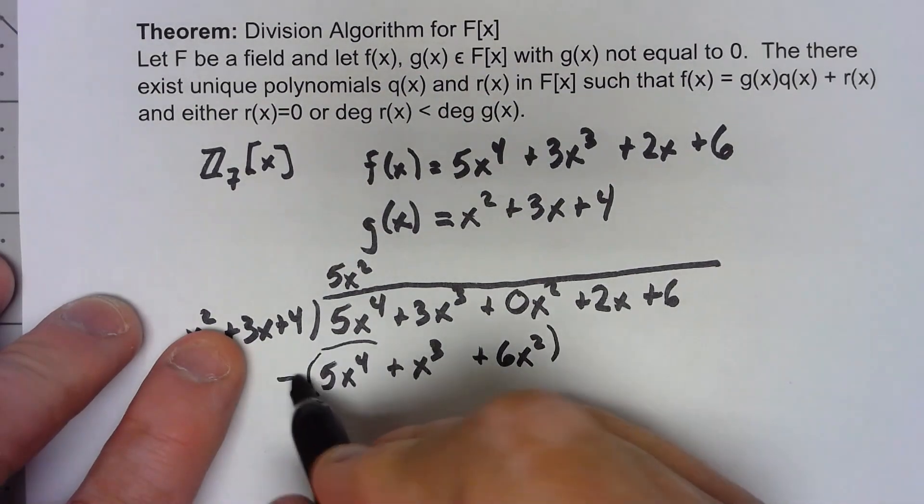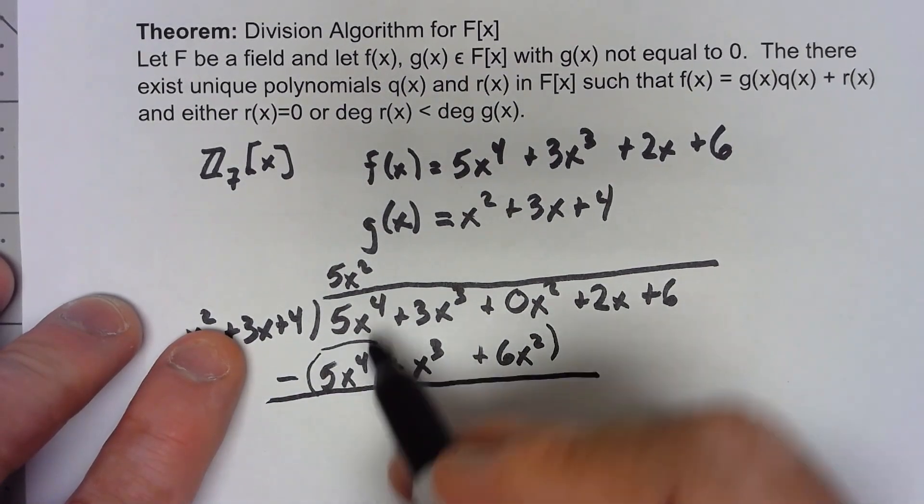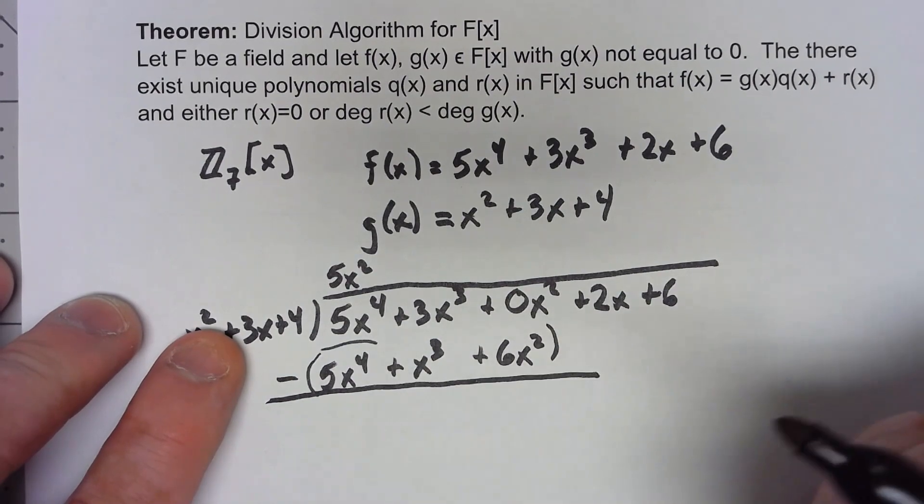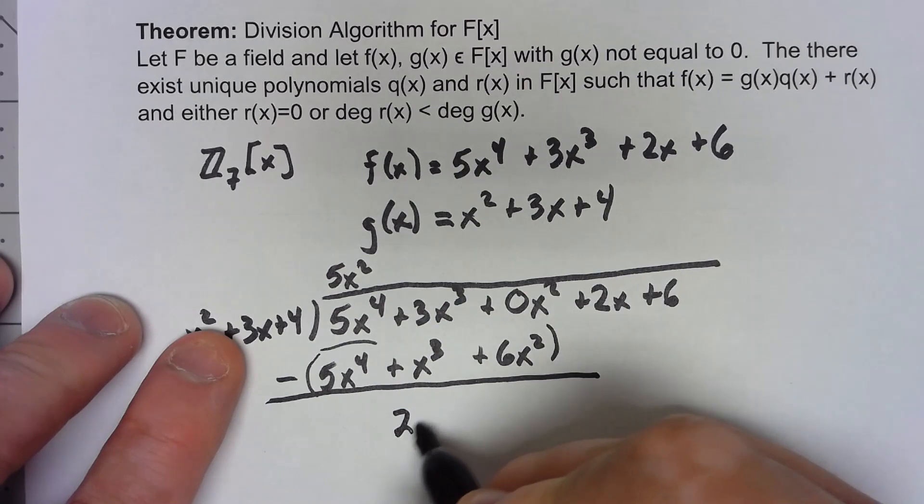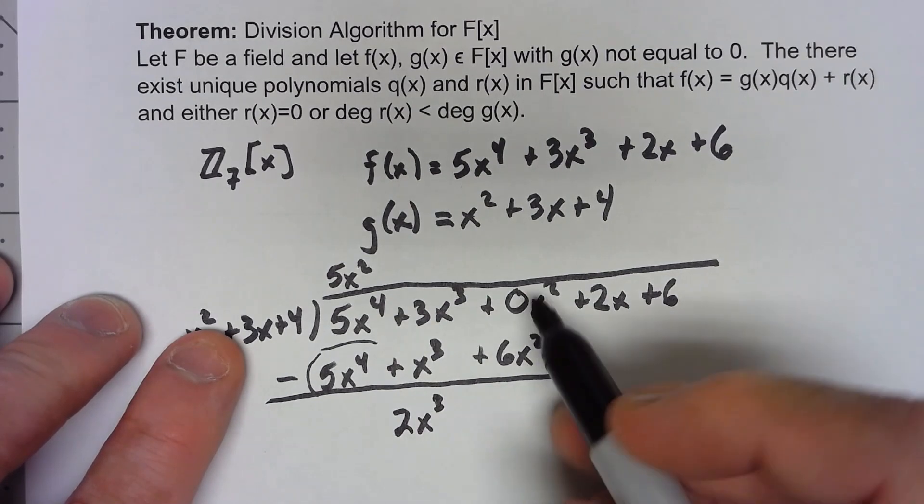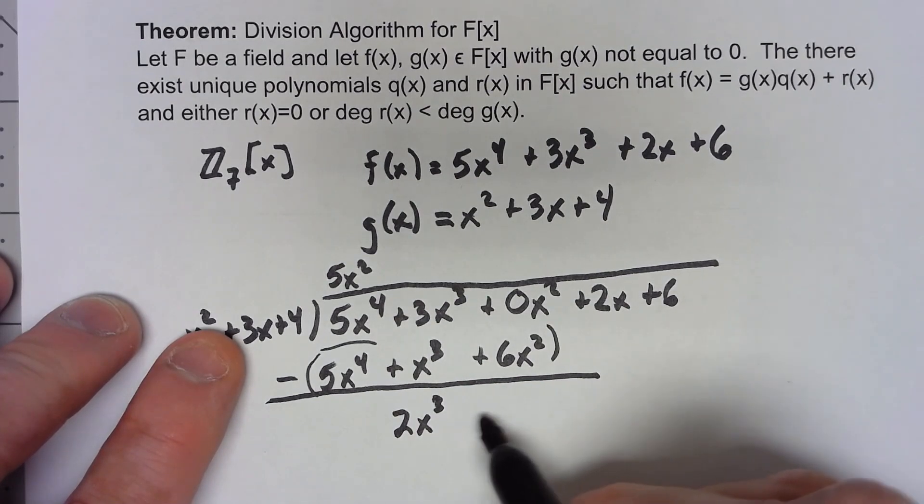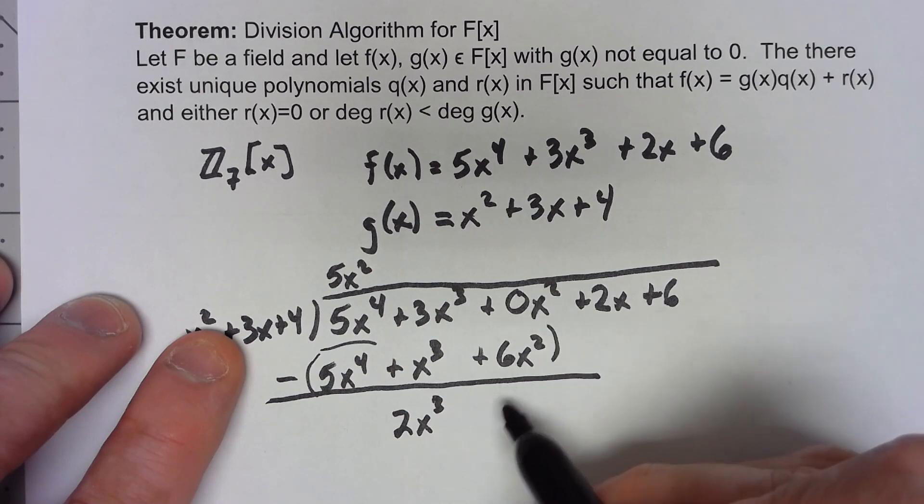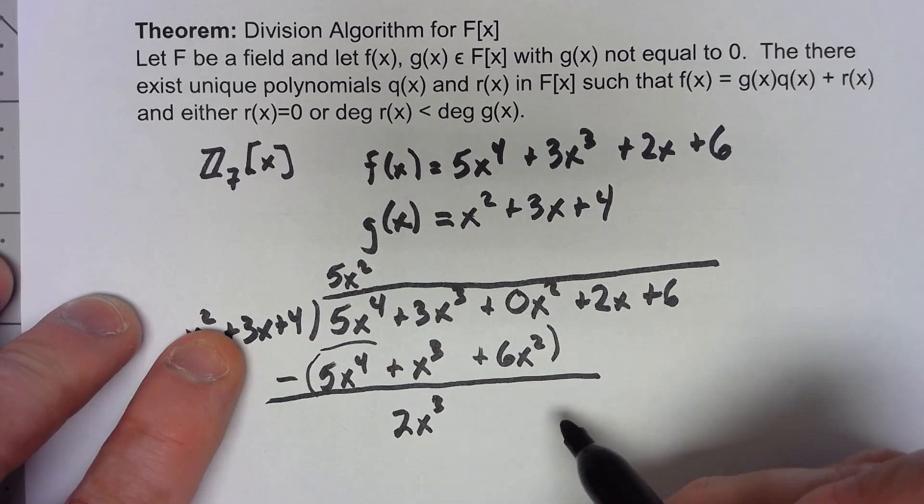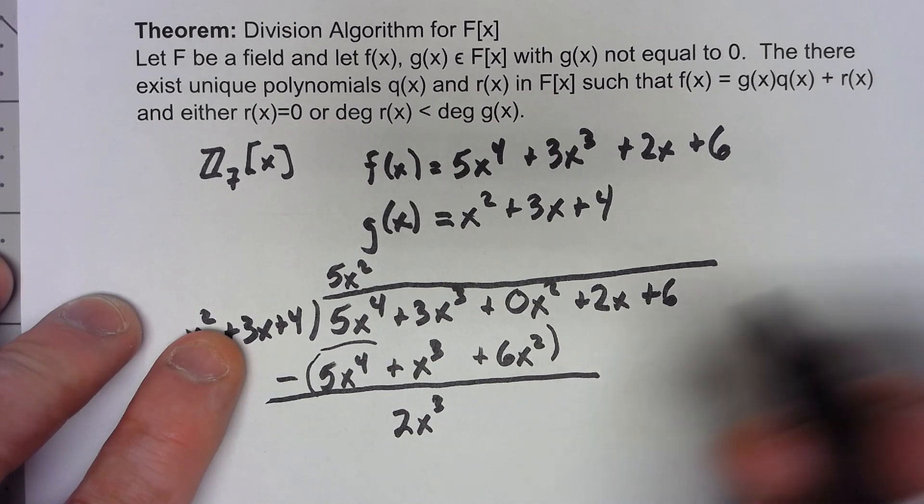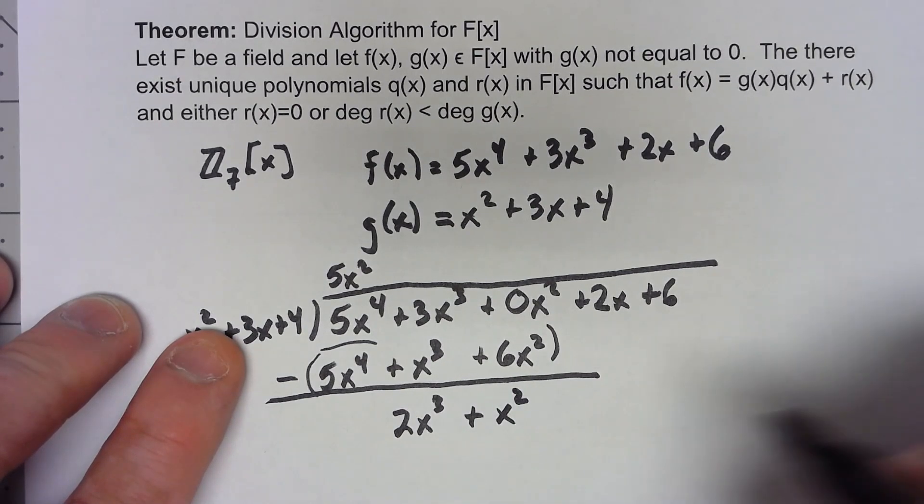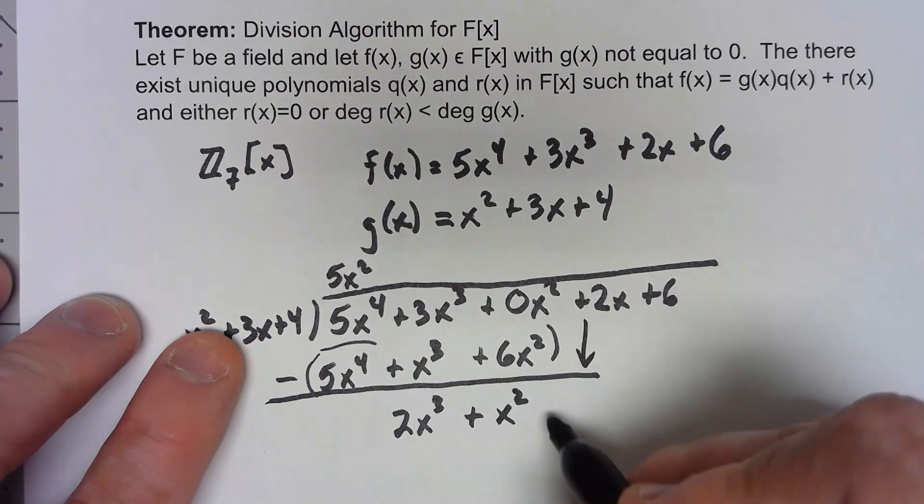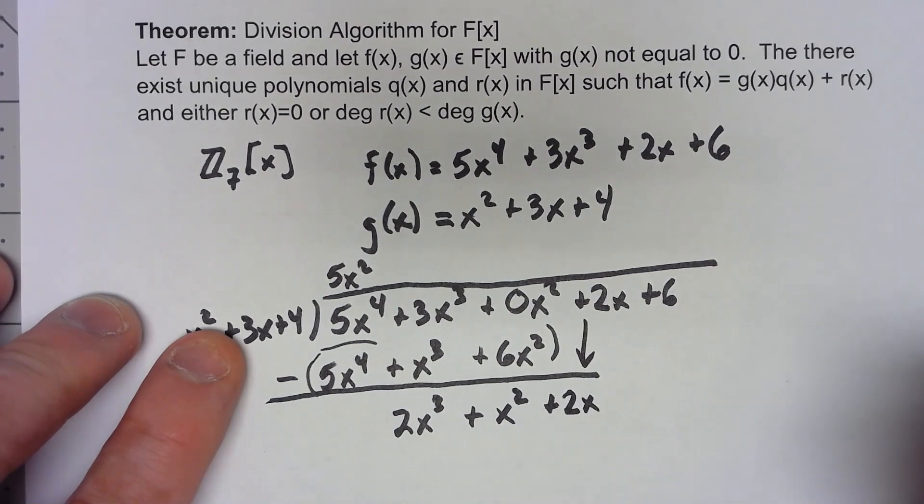Then standard long division is we're going to subtract 5x to the fourth minus 5x to the fourth, just cancels out. 3x cubed minus x cubed gives me 2x cubed. Now here, again standard subtraction would say negative 6x squared, but since we're doing things in Z7, that's actually going to be plus x squared. Then we'll bring down the next term, so we get a plus 2x, and we just repeat that.